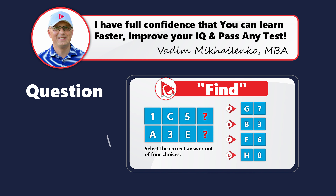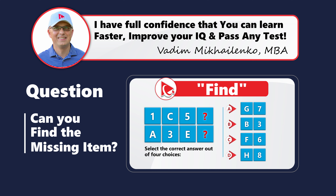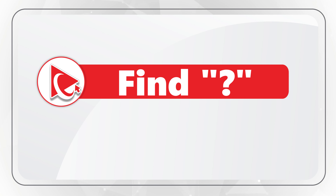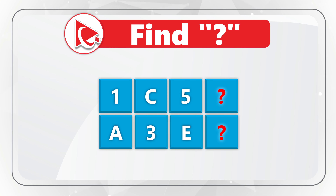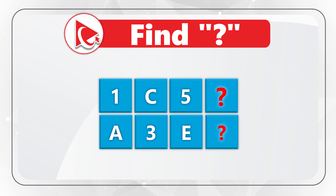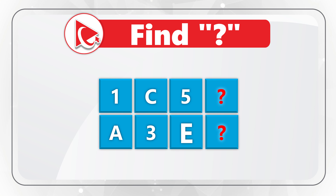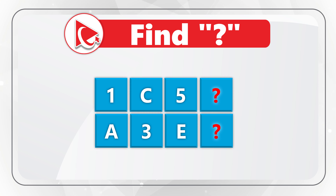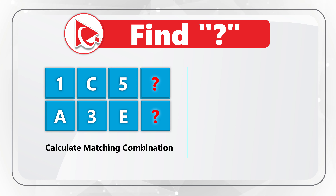Calculating missing items is one of my favorite questions, especially considering the fact that calculations are very simple. You're presented with two rows of values. The first row contains values 1, C, 5, and then comes the missing value. The second row contains values A, 3, E, and then comes the missing value. You need to select the calculated combination out of four different choices.